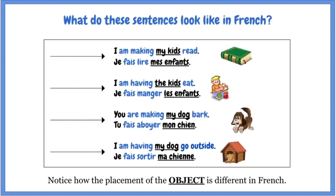I am making my kids read, or I am having my kids read. I have to use the verb faire in there. I just have the verb faire in the present tense — je fais — and then I follow it up with an infinitive, in this case lire, which means to read. So, je fais lire mes enfants. In French, I am making read my kids. I'm having the kids eat: je fais manger les enfants. Quite different to if you said je vais manger les enfants, because that would mean I'm going to eat the children. But change one letter — je fais manger les enfants — and now you're actually doing something nice for your children. Instead of eating them, you're having them eat.